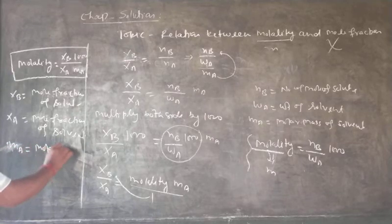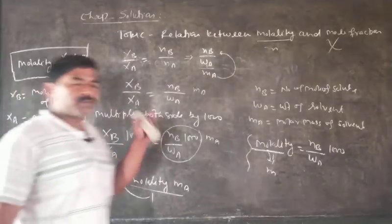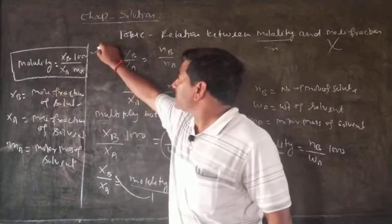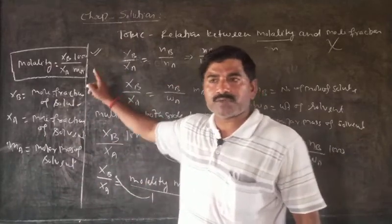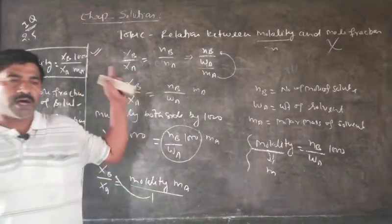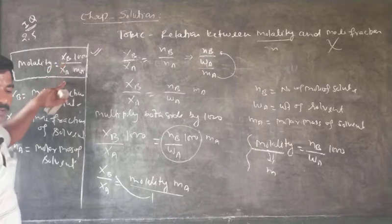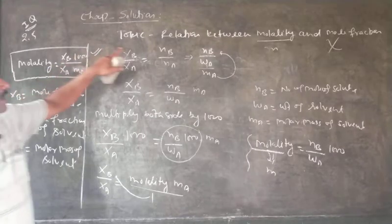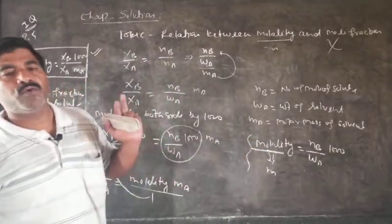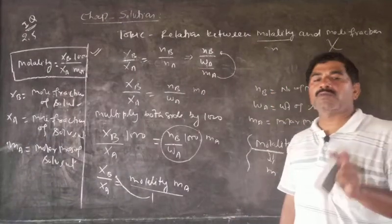In this way, we have proved the relation between molality and mole fraction. From NCERT, there is a question based on this index. The relation is: molality is equal to 1000 into mole fraction of solute upon mole fraction of solvent into molar mass of solvent.